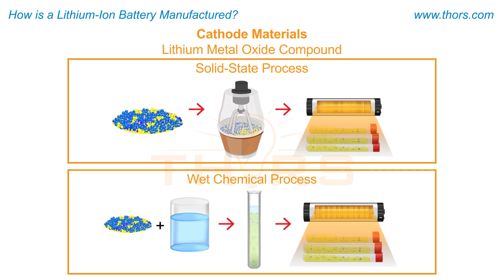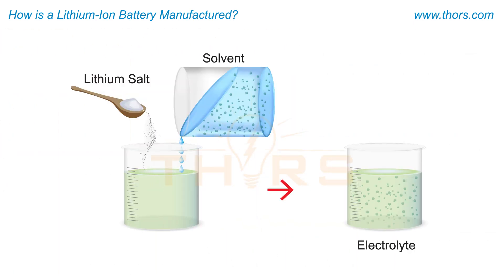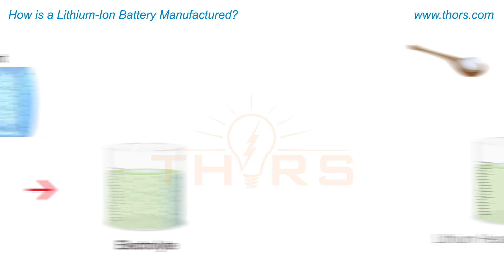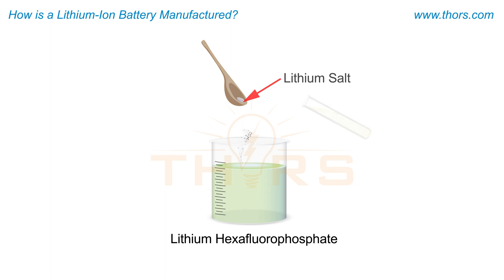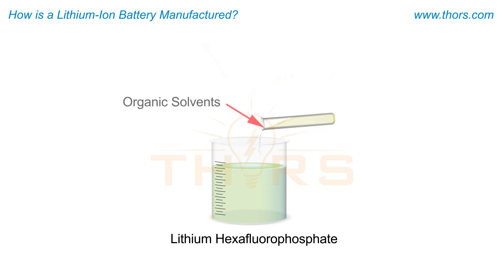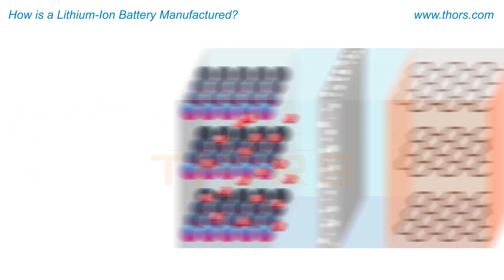The major source for the cathode material is a lithium metal oxide compound that is synthesized using different solid state and wet chemical processes. The salt and solvent that make up an electrolyte are produced using different chemical reactants through suitable processes. The most commonly used electrolyte is lithium hexafluorophosphate, which is a mixture of lithium salt and different organic solvents.